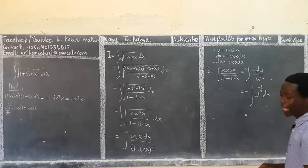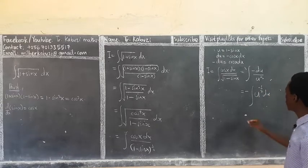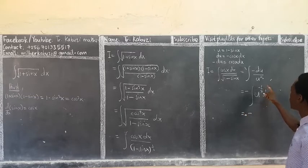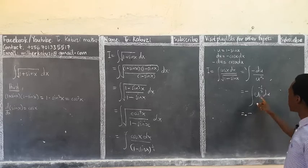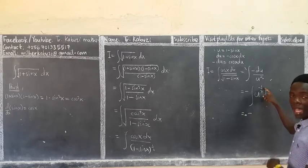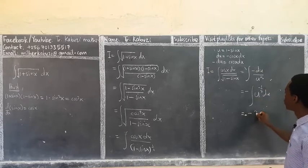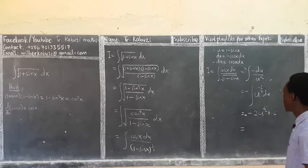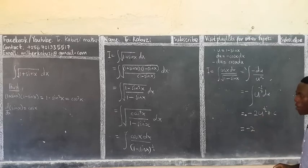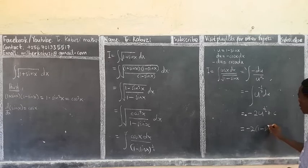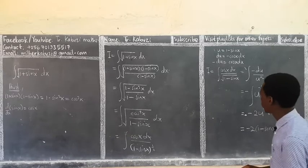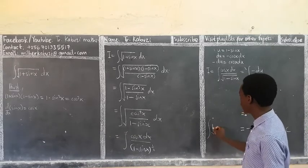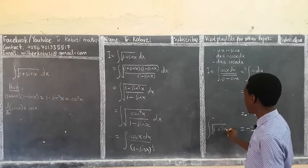Now I integrate u^(-1/2): increase the power by one, so -1/2 + 1 = 1/2, and divide by the new power of 1/2. Dividing by 1/2 is the same as multiplying by 2. This gives us -2 · u^(1/2) plus a constant of integration. Now substituting back, u = 1 - sin x, so the result is -2√(1 - sin x) + C.